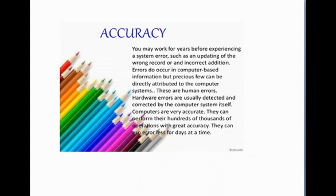The second strength is accuracy. Computers are accurate machines. A computer can perform all calculations and comparisons accurately, provided the hardware does not malfunction. If a computer shows an error or wrong output, it totally depends on the instructions provided by the user — these are human errors. Hardware errors are usually detected and corrected by the computer system itself. Computers can perform hundreds of thousands of operations with great accuracy.